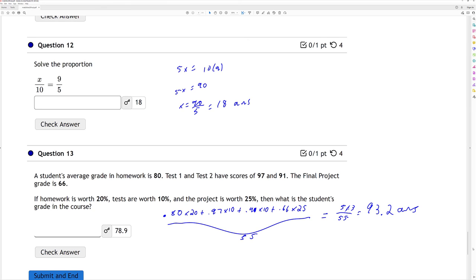Plus of the first test, they captured 97% of it. Of the second test, they captured 91% of it. And then of that final project, they captured 66% of it. They added those together, and it gave them 51.3 points divided by the total weight, which is 55, gives them a 93.2 average.